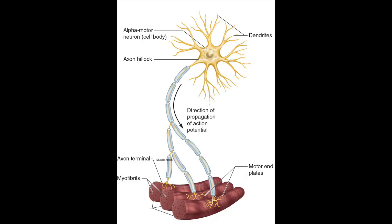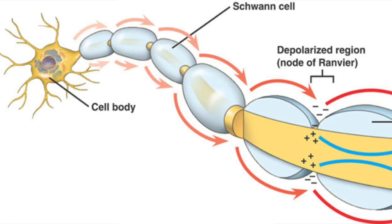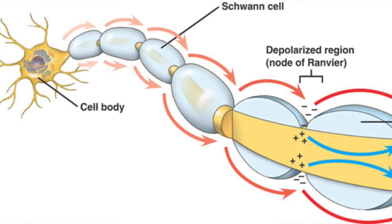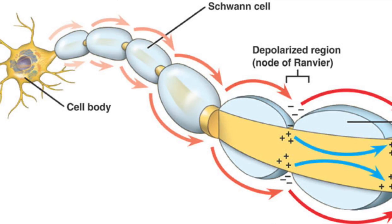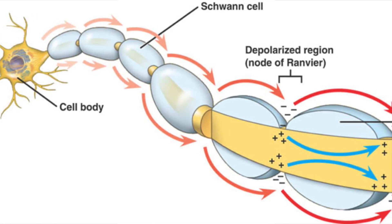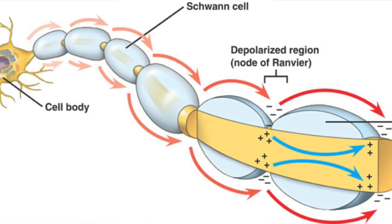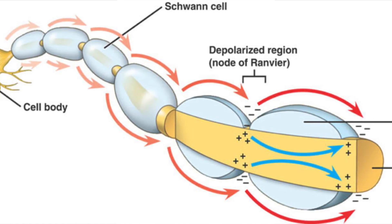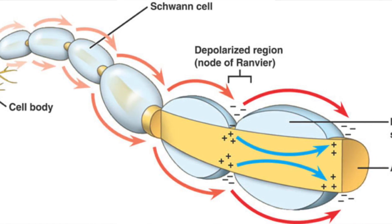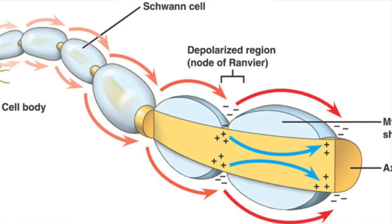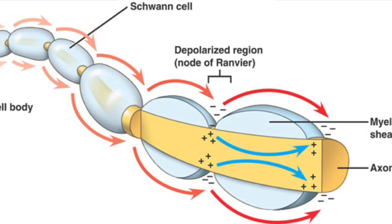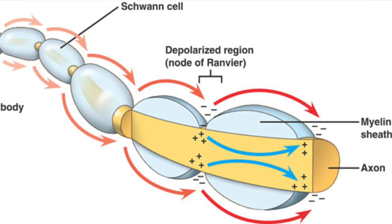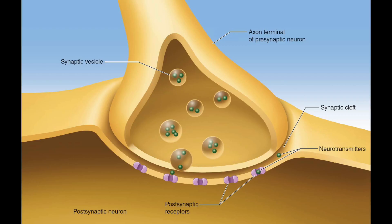The alpha motor neuron sends a signal, or action potential, down the axon. On the axon are Schwann cells, which create a myelin sheath — a fatty substance that insulates the cell membrane. This sheath leaves gaps called the nodes of Ranvier, and the action potential travels via saltatory conduction, meaning it jumps from node to node for faster conduction.